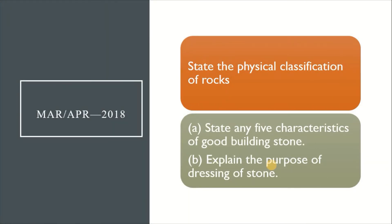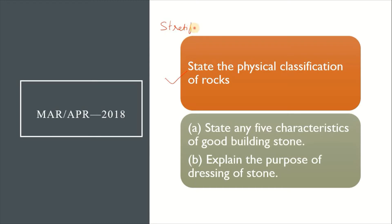The next paper is March-April 2018. The first short answer question is: state the physical classification of rocks. The physical classification of rocks includes stratified rocks, unstratified rocks, and foliated rocks. This is a 3-mark question.